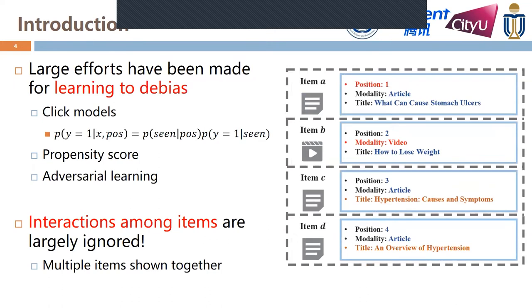Along this line, large efforts have been made in recent years for learning to debias, for example, methods based on click models and propensity scores. However, most existing studies only study debiases caused by one specific item attribute, such as the position or the modality. In online platforms, usually multiple items will be displayed simultaneously, and user behaviors can be further affected by the interactions among these items. Users may click item A due to the top position, or item B due to the video modality. Also, they may click item C or item D but not both, since they have similar titles. Therefore, we propose a novel type of bias named context bias to describe the bias caused by item interactions, and we design a novel context bias-aware recommendation model named CBR to solve this problem.